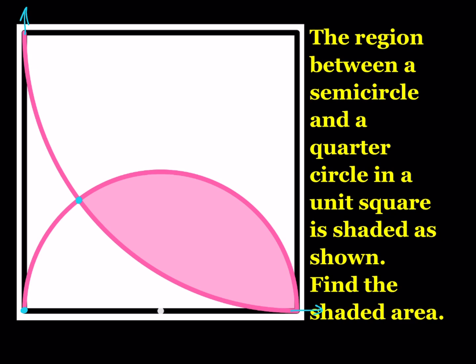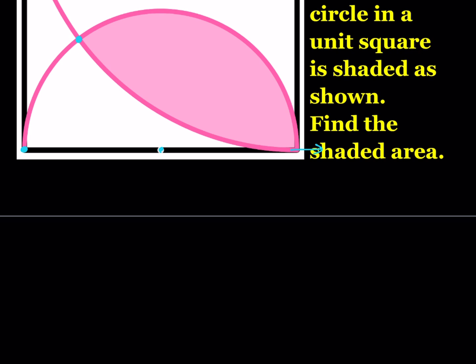Let's find the equation of the semicircle. Since we're in a unit square, the center is going to be at (1/2, 0) and the radius is 1/2. So the equation for our semicircle is (x − 1/2)² + y² = (1/2)² = 1/4.